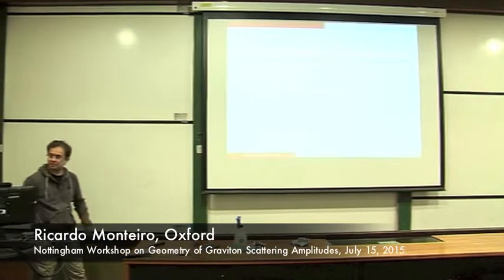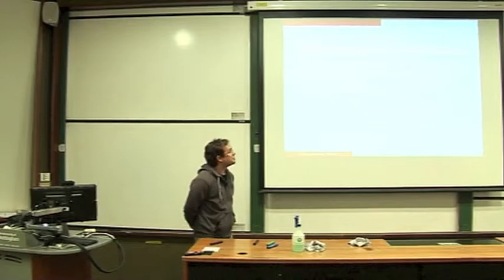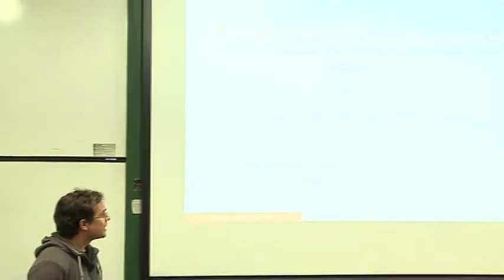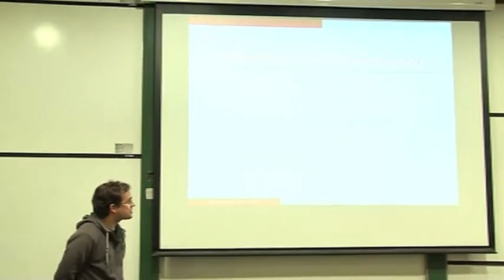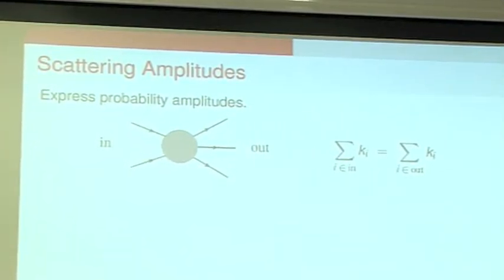I want to thank Kirill for organizing this meeting and for inviting me. My talk will be, to a great extent, a continuation of Donald's talk. I'll tell you about a certain structure in perturbative gauge theory and gravity called kinematic algebra. This is based mostly on work done with Donald but also with Redker Bowles and Franka Iserman, and briefly at the end on work to appear with Song He and Oliver Schlotcher.